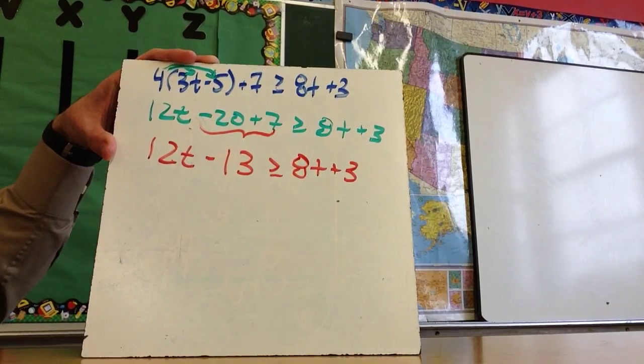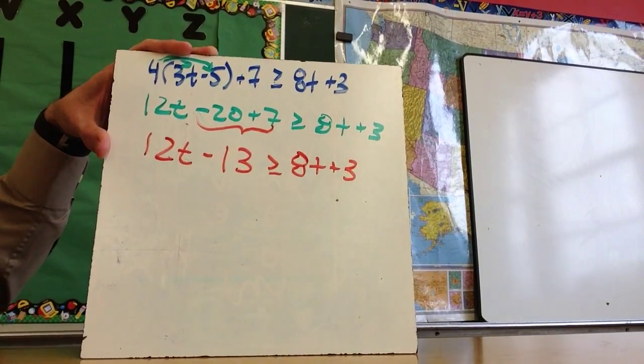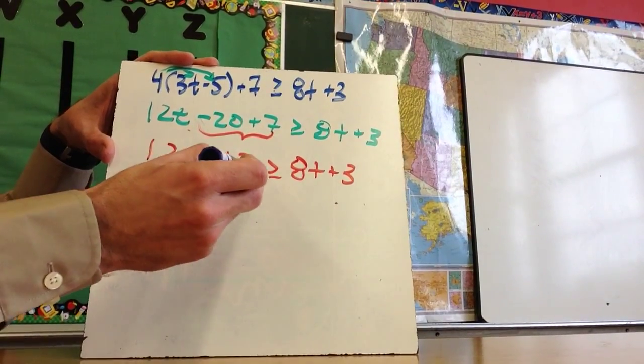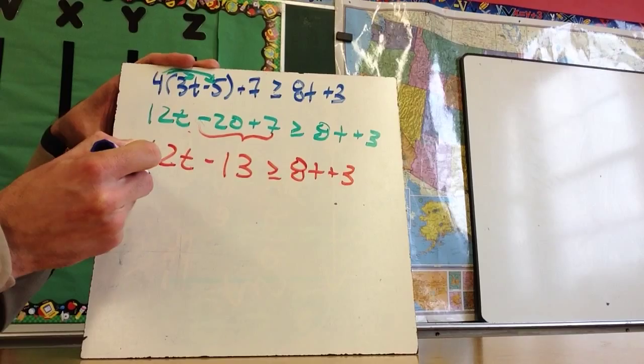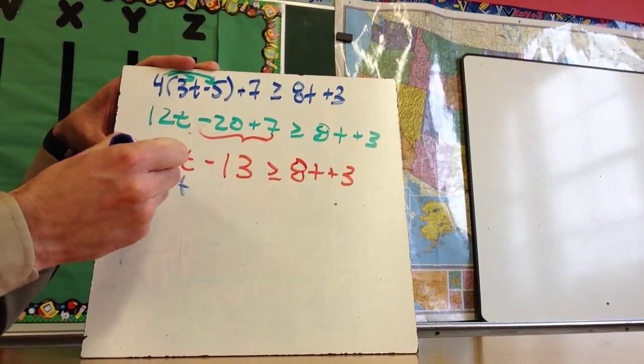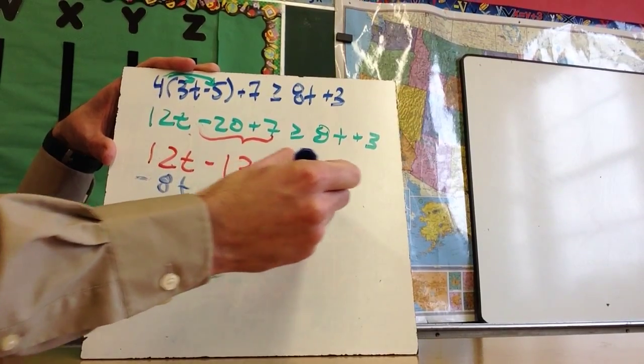And so then, now there's a bunch of different ways I can solve it. Personally, I'm going to try to get the t on the left and the number on the right, so I'm going to end up subtracting 8t from both sides. This is not necessarily the step that you have to do next. Subtract 8t, subtract 8t.